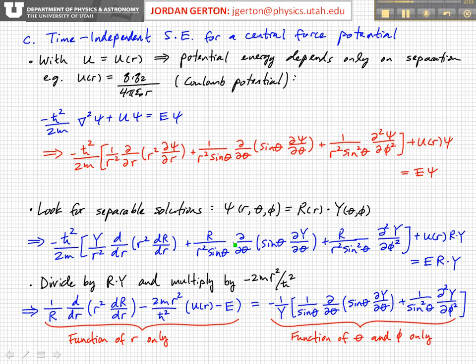If we divide this expression by psi, so we divide it by R times Y, and then we also multiply it by minus 2m over h-bar squared, so basically we're dividing by this prefactor, and we're also multiplying by r squared so that we can get rid of the r squareds in the second two terms. Then we get 1 over R times d/dr of r squared dR/dr, minus 2m r squared over h-bar squared times the potential energy, which is again just a function of r, minus the total energy E, which is explicitly a number.